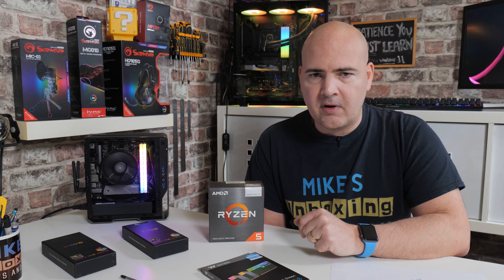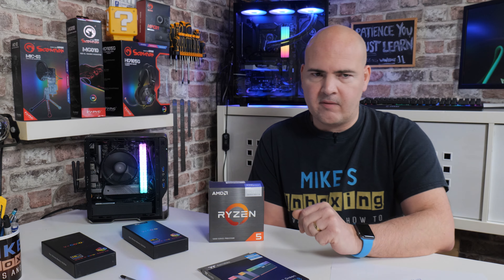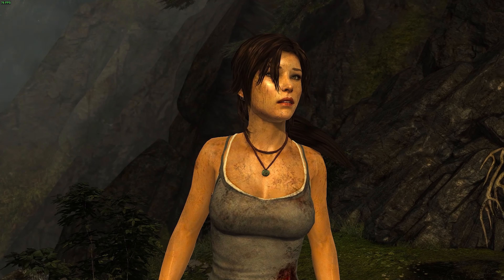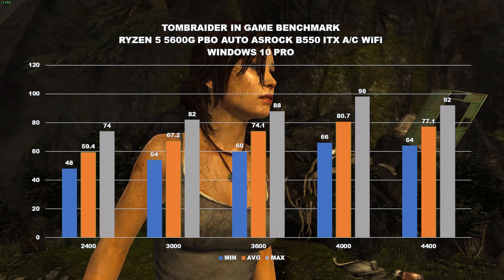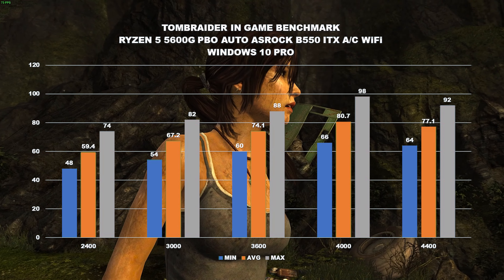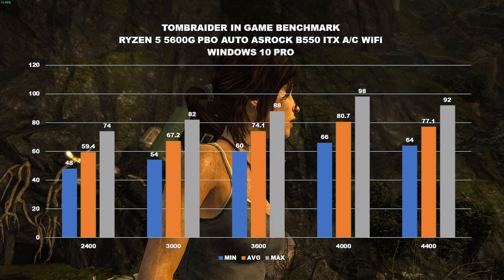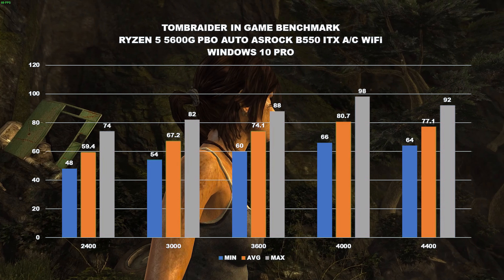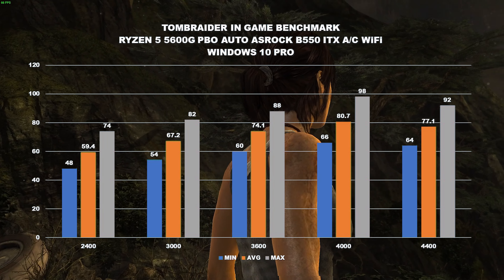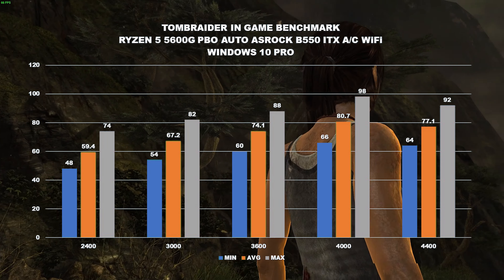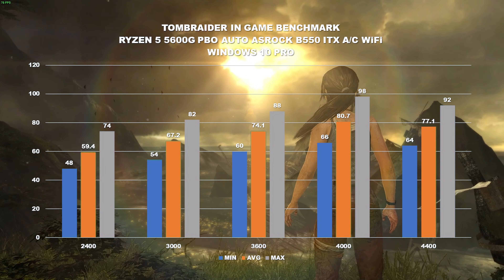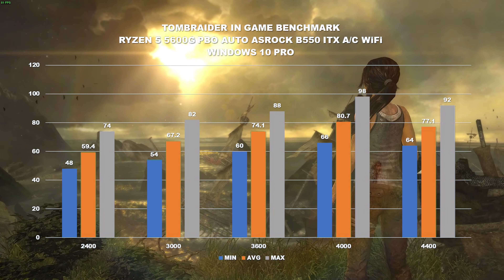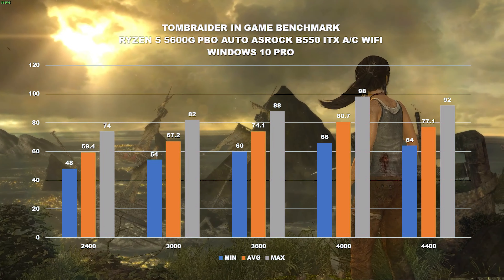Let's take a look at a slightly older title that's absolutely perfect for these kinds of APUs — the original Tomb Raider. We're starting off at 2400 MHz and going right the way up to 4400. There actually is a decent jump here. This particular engine responds to memory frequency quite nicely, and we're seeing anywhere between 15% and 20% increase going from 2400 right up to 4000. But once again, going up to 4400 we find we're essentially capped. So realistically, somewhere between 3600 and 4000 is going to be ideal for this kind of setup.